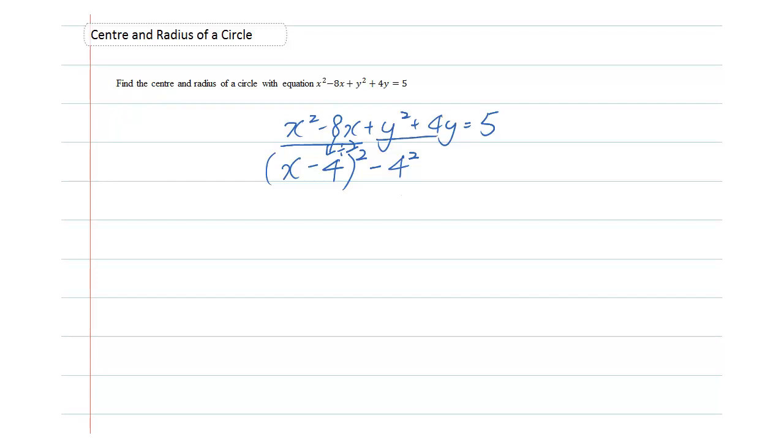Now, we're going to do the same thing for our y² and our y term. So it will be (y + 2)² - 2² = 5. So once again, how do we get this 2 here? It's basically coefficient of y divided by 2.